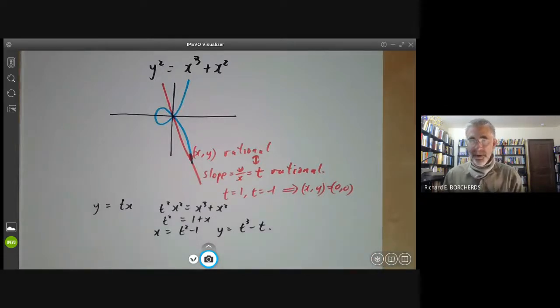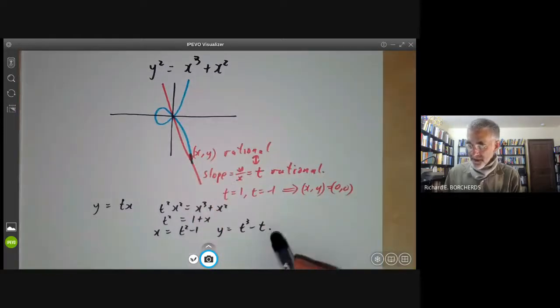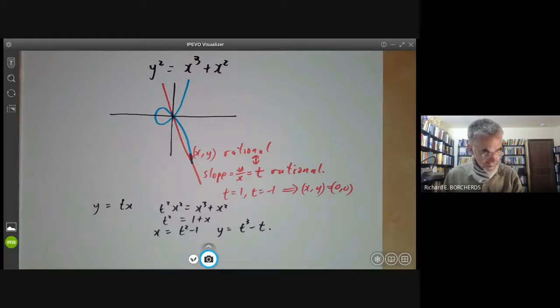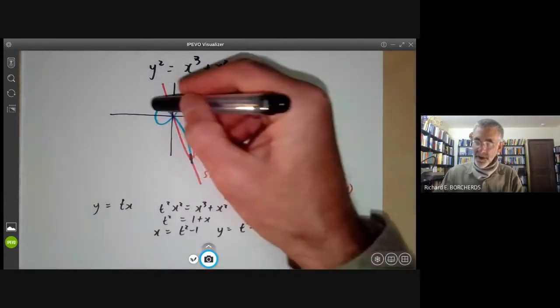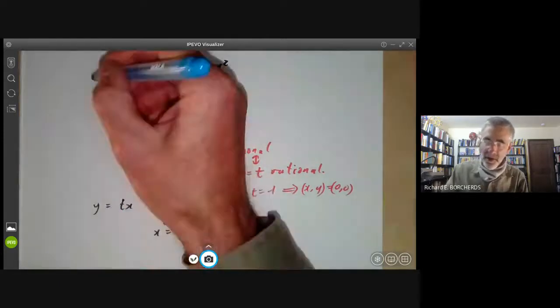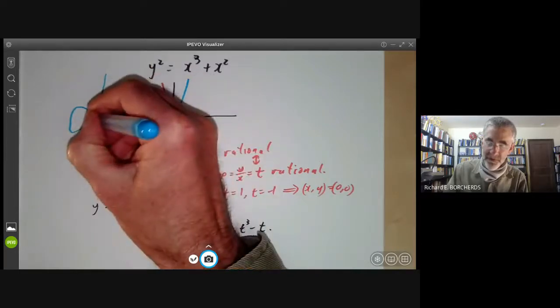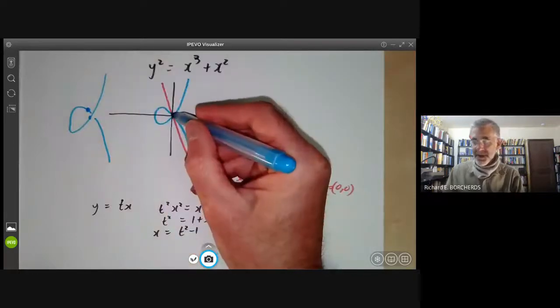So we see we have another birational equivalence between this curve and the line of rational points t because the maps taking x, y to t or t to x, y are both polynomials or rational functions. So you can think of this cubic curve as really just a copy of the rational line, except that two of the points on the rational line are identified and mapped to the same point here.